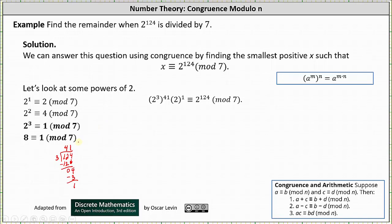Notice the 41 is the quotient, and because we have a remainder of 1, we have one extra factor of 2. 3 times 41 plus 1 equals 124.